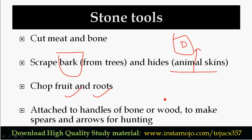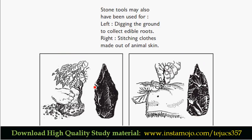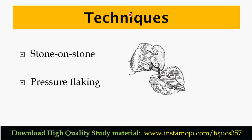Stone tools were made using a technique called pressure flaking — striking stone against stone to shape tools. Pressure flaking is used to create stone tools. Animal skins were used for clothing.